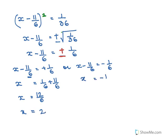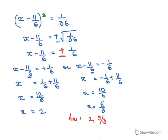For the minus case: x = -1/6 + 11/6 = 10/6, so x = 5/3. The answers are x = 2 or x = 5/3.